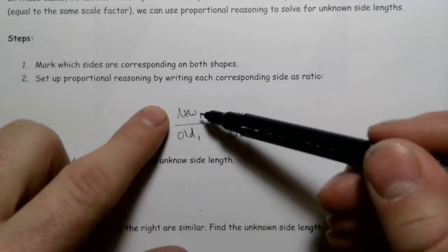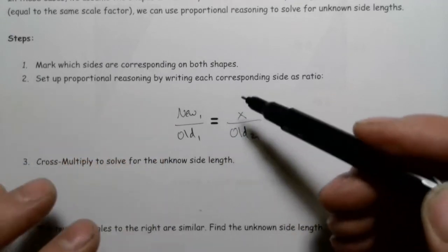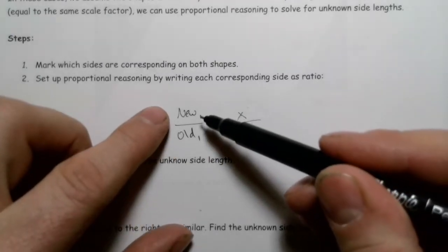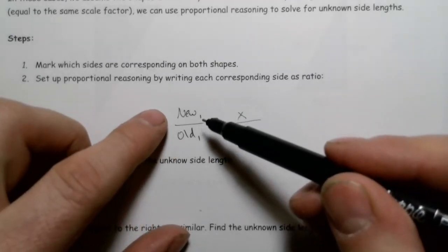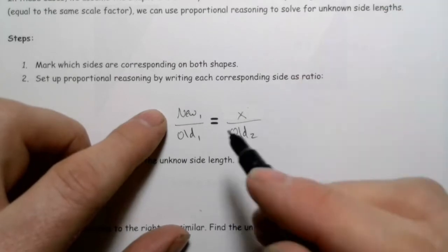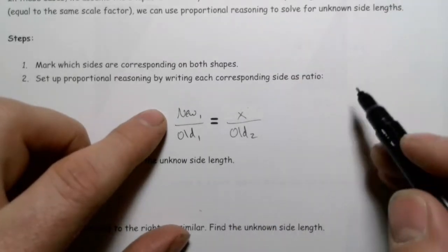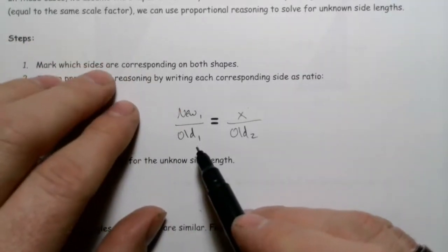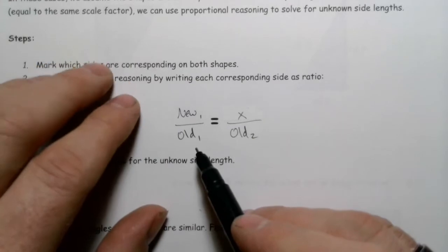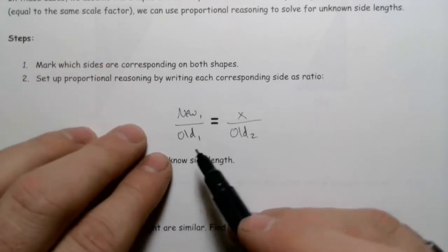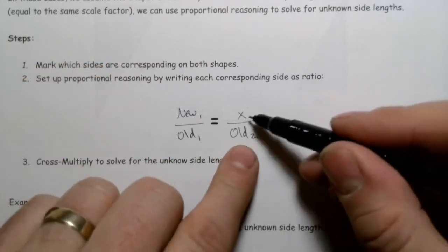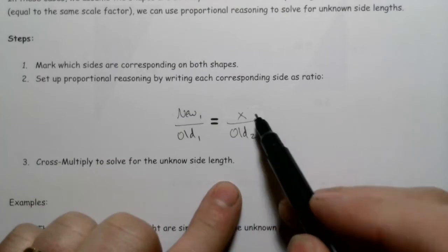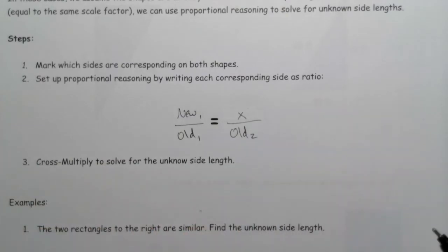We're going to look for the scale factor like we did in a previous lesson. We take one of the sides of the new shape, divide it by its corresponding side length in the old figure, and then set up an equal proportion on that side. Again, cross multiply and divide.